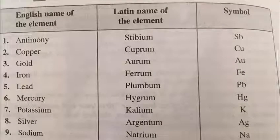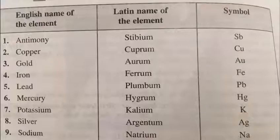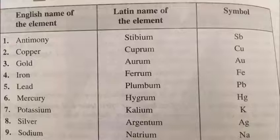First example is antimony which has been derived from its Latin name stibium whose symbol is Sb. Similarly copper symbol is Cu and its Latin name is cuprum. Gold from aurum that is Au, iron from ferrum that is Fe, lead